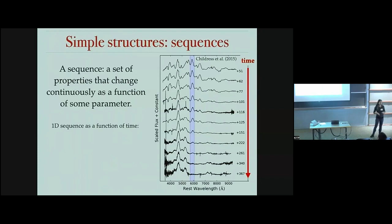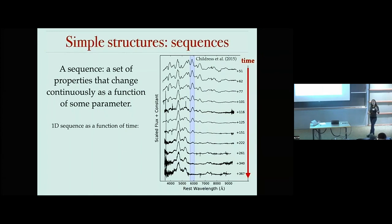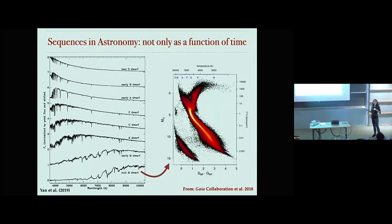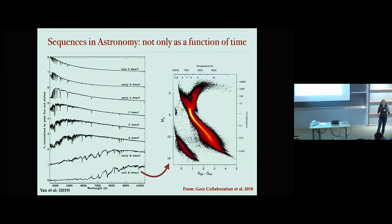Another type of simple structure is a sequence — a set of properties that changes continuously as a function of some leading parameter. Perhaps the most natural sequence is one as a function of time. You can see here a one-dimensional object's spectrum — flux as a function of wavelength — changing continuously as a function of time. But sequences don't only have to be in time; the leading parameter can be mass, luminosity, density, or temperature. In many cases in astronomy, what we're seeing is not classes but rather sequences.